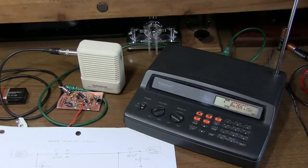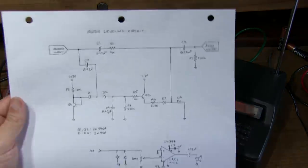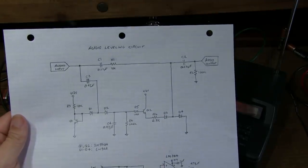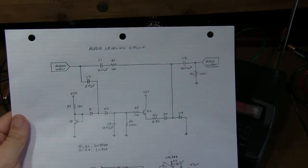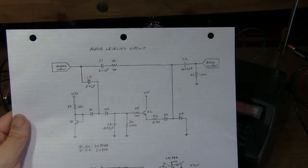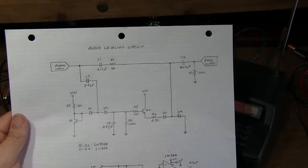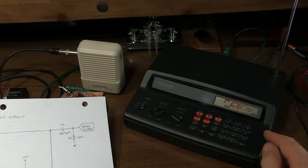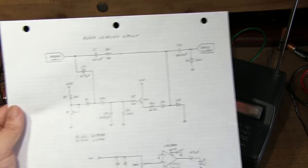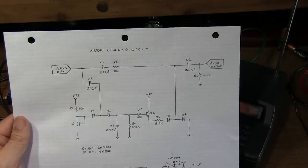Several videos ago, we had a CircuitFun video that described this circuit here, an automatic leveling circuit or audio leveling circuit. You could also call it an audio compressor or automatic volume control. And the idea was to use this with a scanning receiver to make the receptions have all about the same audio level.